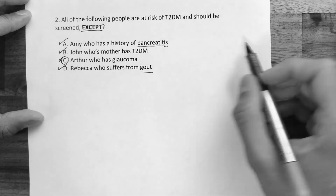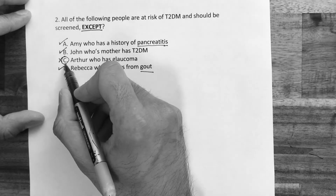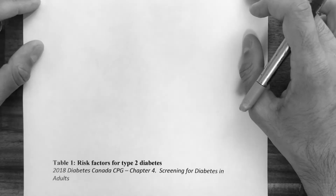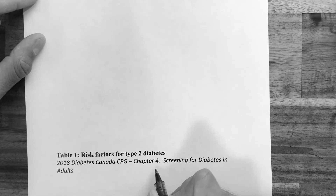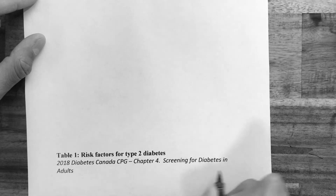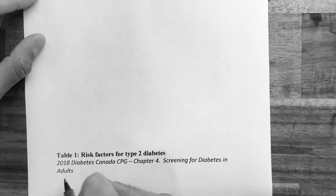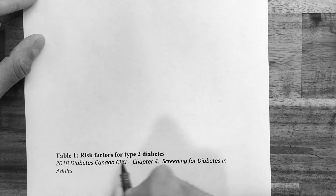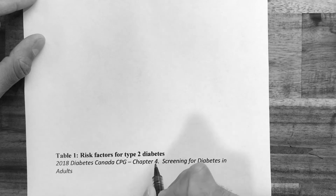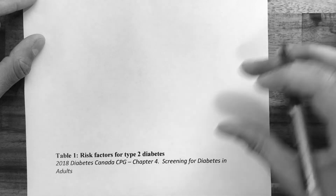You can find a full list of risk factors in chapter 4, screening for diabetes in adults — table 1, risk factors for type 2 diabetes. Please refer to that.